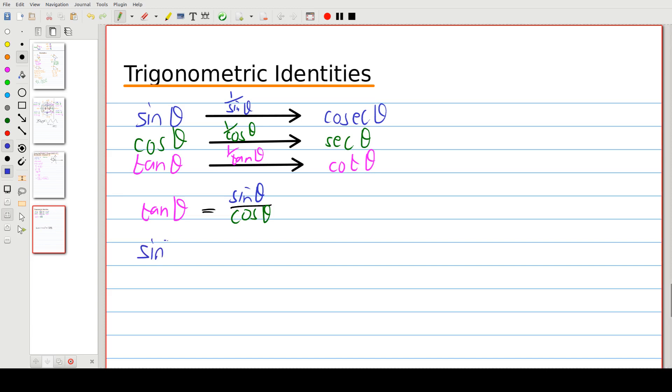The second identity that we need to know is sine squared theta plus cos squared theta equals one. Then the third one is tan squared theta plus one equals sec squared theta. And the final one is that cot squared theta plus one equals cosec squared theta.